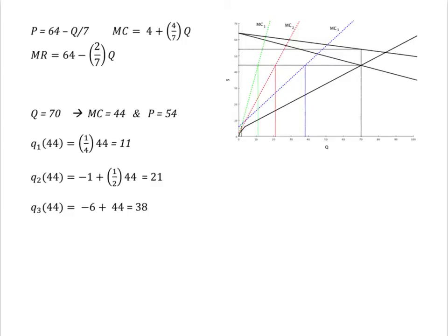Equating marginal revenue to marginal cost, we get 60 equals 6 over 7Q, or Q equals 70.